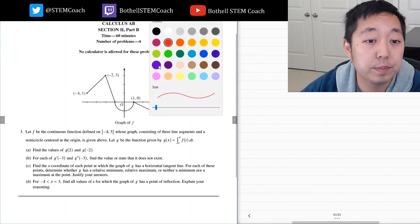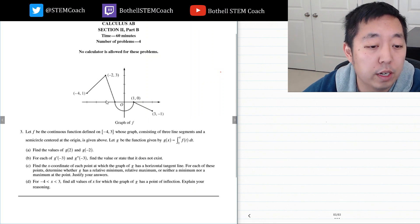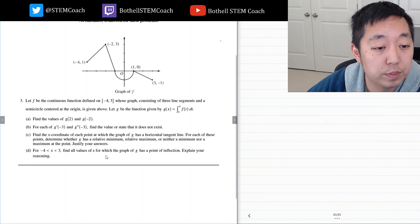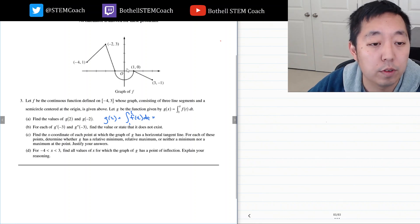Let F be a continuous function defined on negative 4 to 3 consisting of 3 line segments and a semicircle centered at the origin. And let G be given by this. Find the values of G of 2 and G of negative 2. So, G of 2, I just plug into this. G of 2 equals the integral from 1 to 2 of F of T DT. So, it's the integral of F of T from 1 to 2, this here. And that integral would be this area right here.